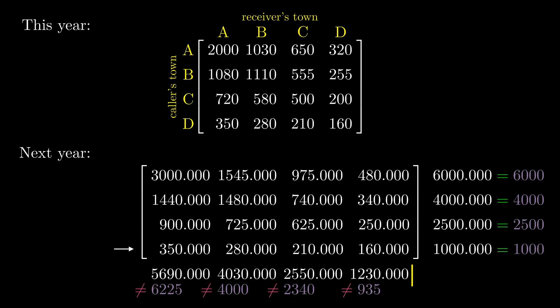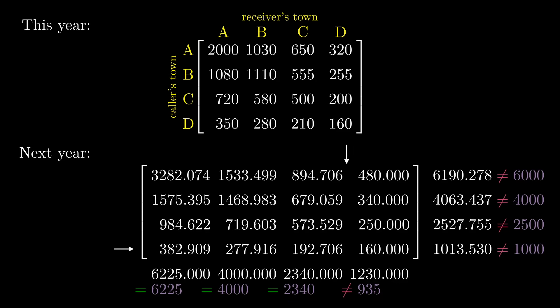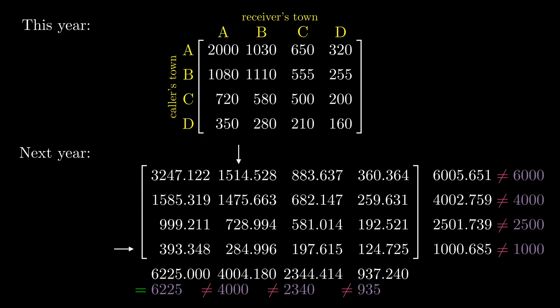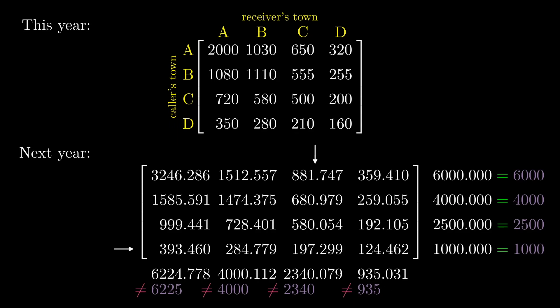The number of incoming calls to each town doesn't match the projection. To fix this, we scale each column. And then we're done, right? Wrong! Because by scaling the columns, we broke the row sums. So what can we do? Well, we have to scale the rows again. Then we have to scale the columns again. Then the rows, then columns, rows, columns. Eventually, the entries stabilize. And now both the row sums and the column sums match the projections. So the entries in this table should be a good approximation of the number of peak calls between each pair of towns. If we're building telephone lines, now we know how many we need. Great!